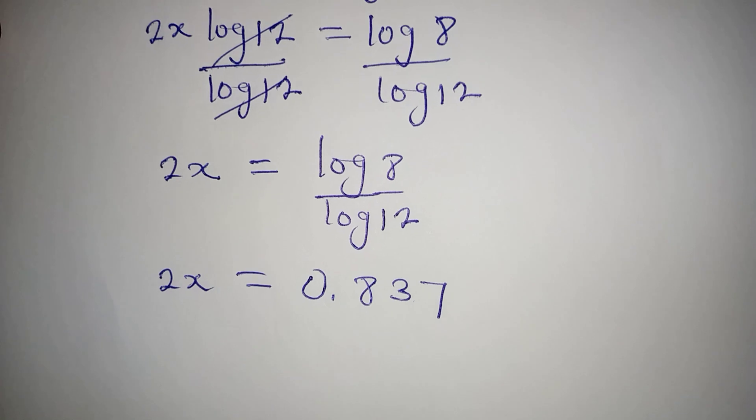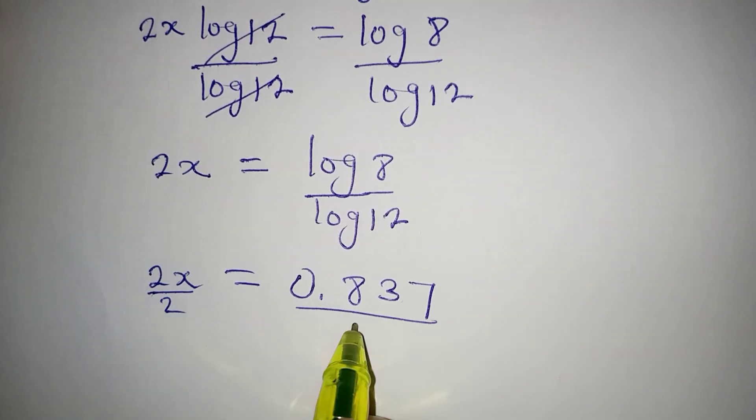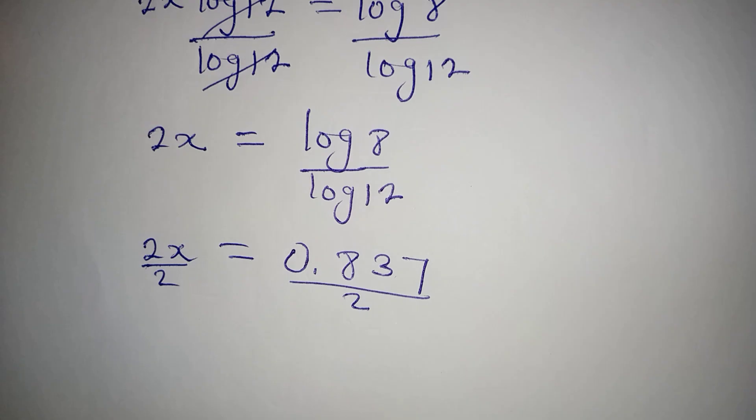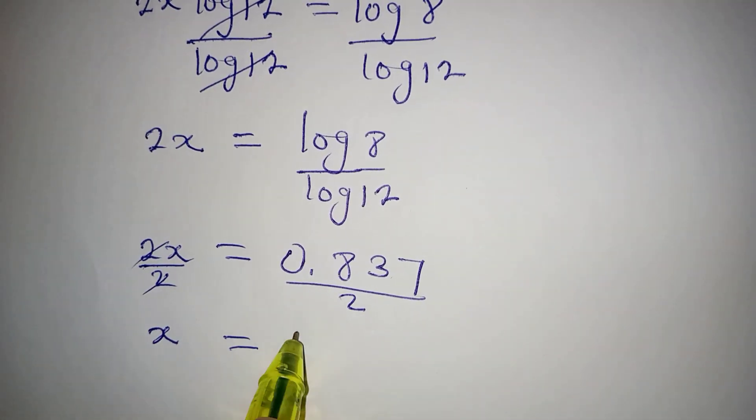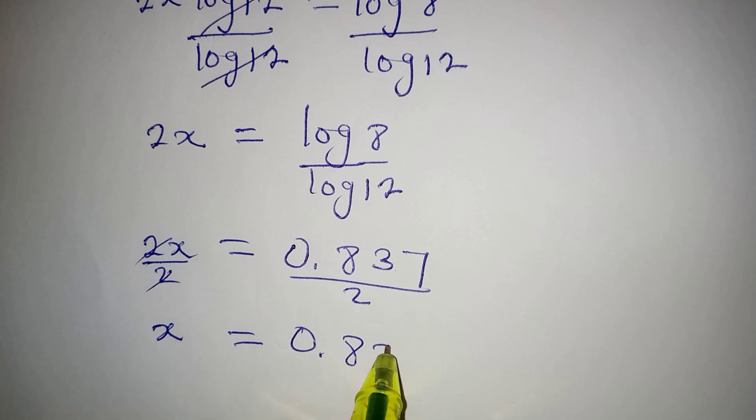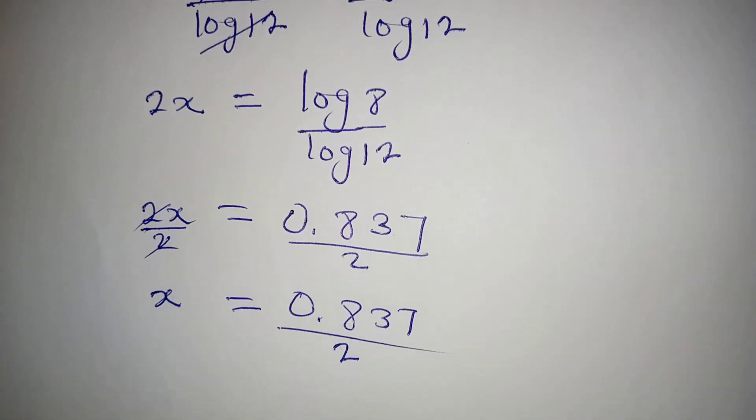This is an approximated figure, so we can divide this by 2. Our x will be equal to 0.837 over 2, so our x equals 0.418 approximately. This is the value of x.